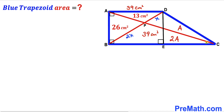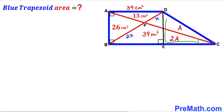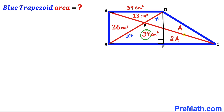Now we are going to focus on the big triangle BCD. It consists of two individual triangles: triangle CDE and right triangle BDE. Both of these triangles have the same height DE. Therefore, the area of triangle CDE is equal to the area of triangle BDE — in other words, if this area is 39 centimeter square, then the area of triangle CDE is going to be 39 centimeter square as well.